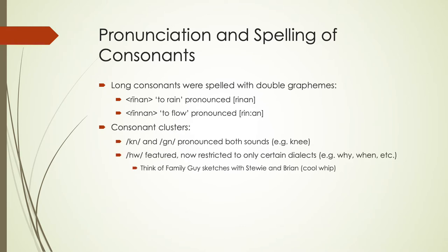Consonant clusters were things that we did pronounce completely. So 'cnuht' and 'gnuht' — we would pronounce both of those sounds. This does not go away until much later in English. So 'knee,' if we have a K and an N next to each other, we would pronounce both of those sounds.